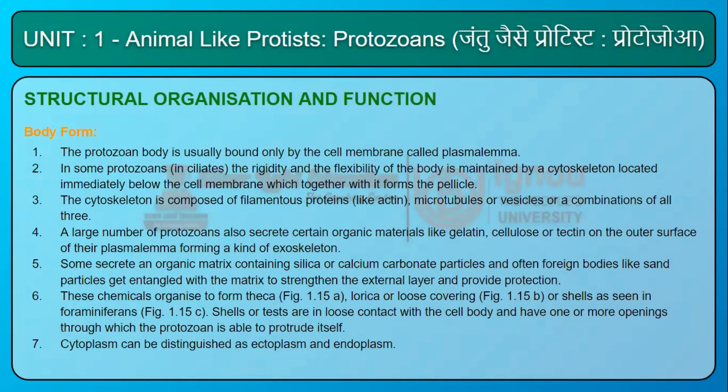Body Form: The protozoan body is usually bound only by the cell membrane called the plasmalemma. In some protozoans, particularly ciliates, rigidity and flexibility are maintained by a cytoskeleton located immediately below the cell membrane, which together with it forms the pellicle. The cytoskeleton is composed of filamentous proteins like actin, microtubules, or vesicles, or a combination of all three. Many protozoans also secrete organic materials like gelatin, cellulose, or tectin on the outer surface of their plasmalemma, forming a kind of exoskeleton. Some secrete an organic matrix containing silica or calcium carbonate, and foreign bodies like sand particles can become entangled with the matrix to strengthen the external layer.